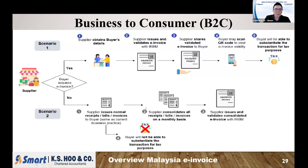However, this doesn't mean you're not required to issue e-invoice at all. You still need to issue e-invoice because at the end of the month, you need to consolidate all the receipts and normal invoices for the month, then submit one consolidated invoice to the income tax so they know what your monthly sales total is. This consolidated e-invoice has a time frame — you must submit within seven days after month end.